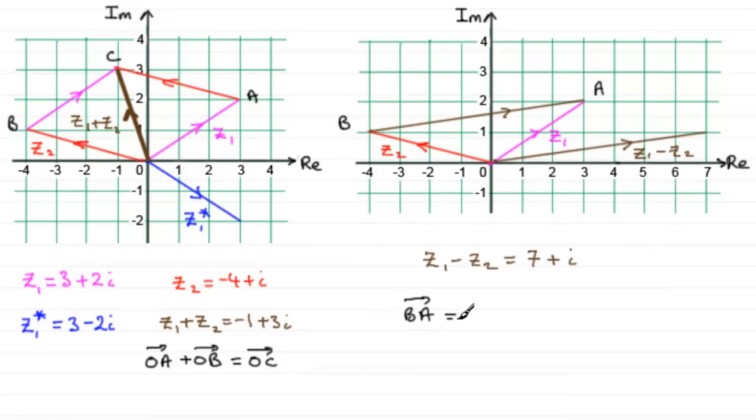And going from BO is exactly the same as doing the reverse direction, minus OB, followed by OA. And we can swap this around as OA minus OB. OA being Z1, OB being Z2. Z1 minus Z2.